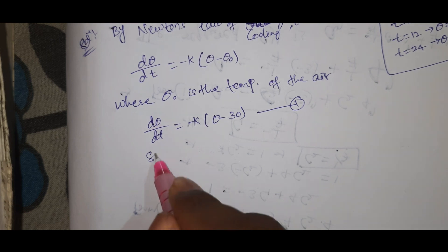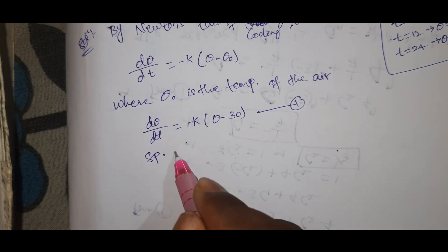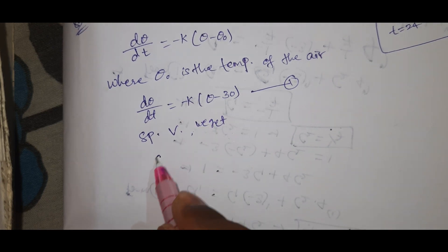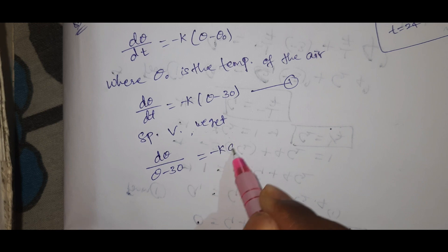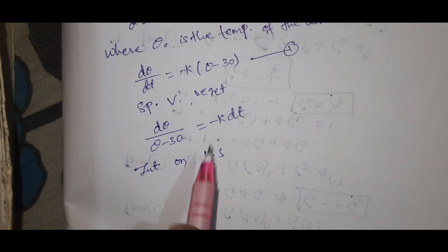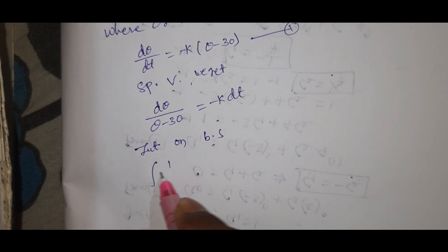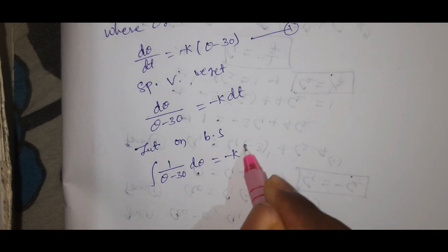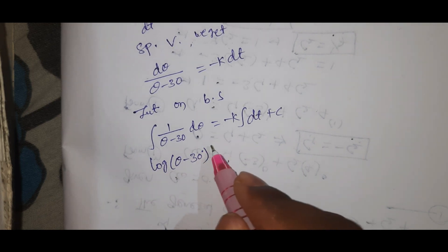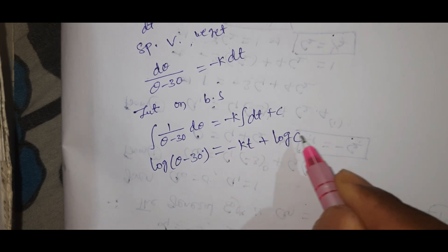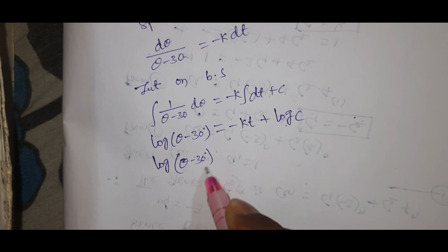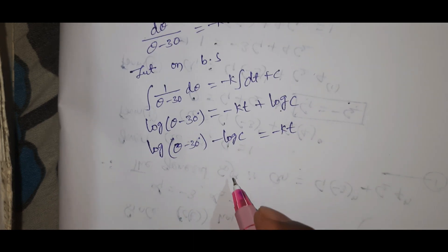Next, separating the variable, we get d theta by theta minus 30 equal to minus k into dt. Integrating on both sides: integral of 1 by theta minus 30 d theta equal to minus k into integral dt plus c. This gives log of theta minus 30 equal to minus kt plus log c. Therefore log of theta minus 30 minus log c equal to minus kt.